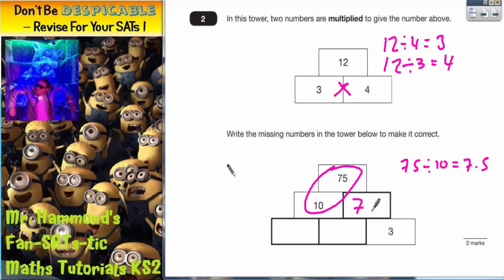So this number here must be 7.5. Just double check, 10 lots of 7.5 is 75, so that's correct.